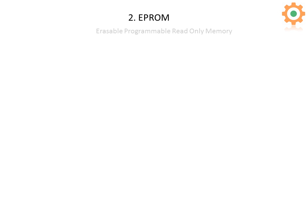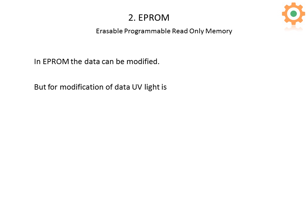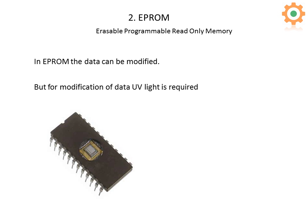The second type is EPROM: Erasable Programmable Read Only Memory. In EPROM the data can be modified, but UV light is required for modification. This is a picture of EPROM — you can see a hole in it. This hole is designed to pass UV light, which automatically deletes all the data inside the EPROM as it passes through.